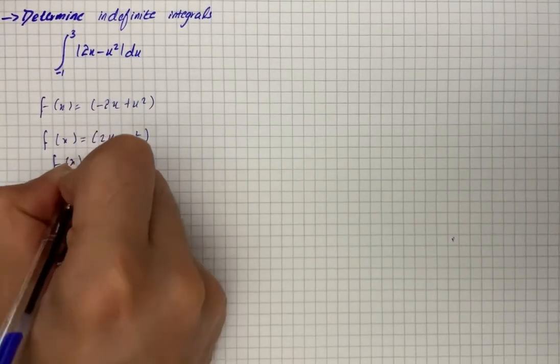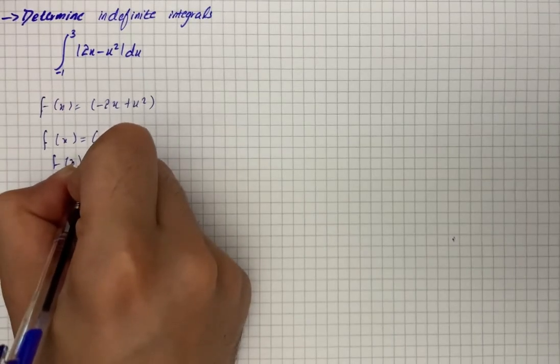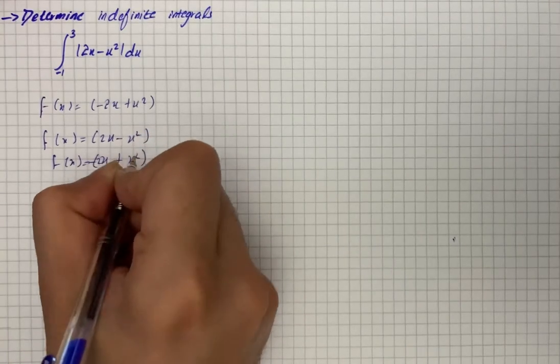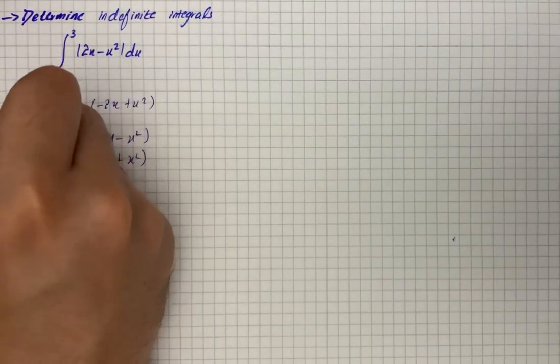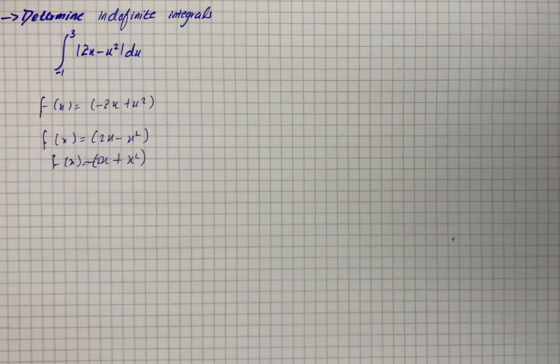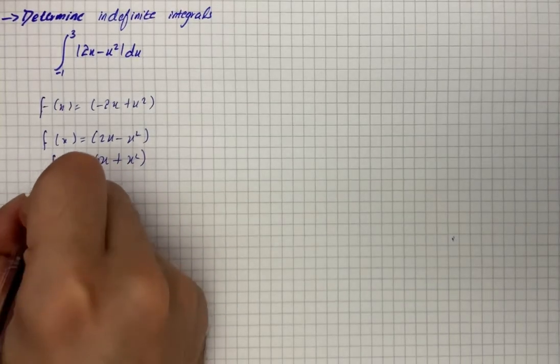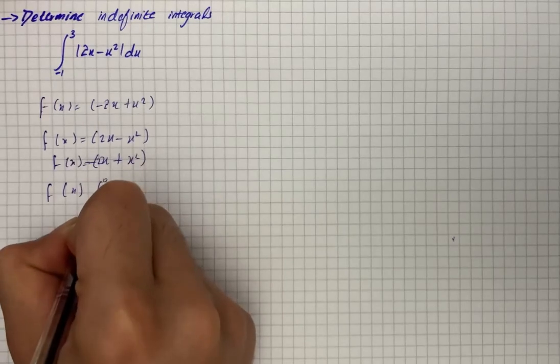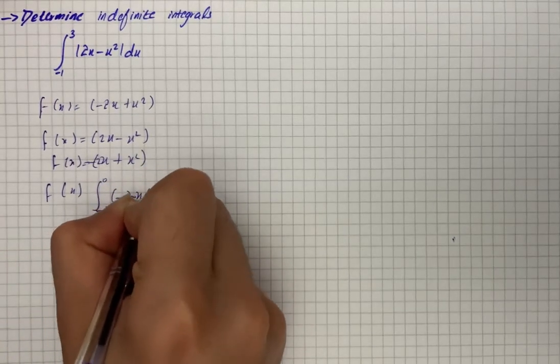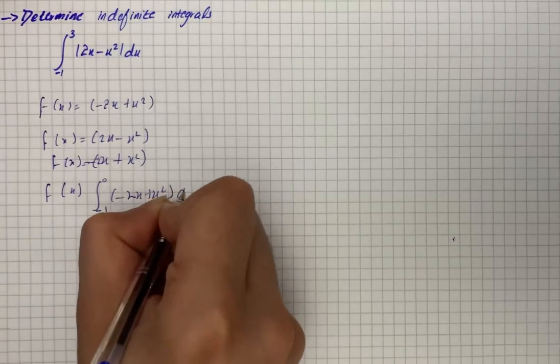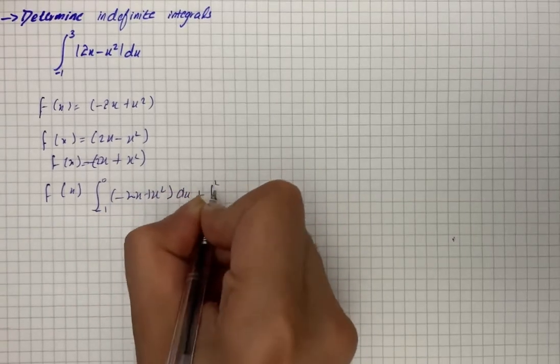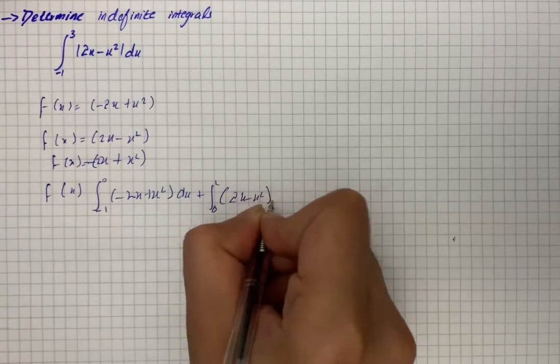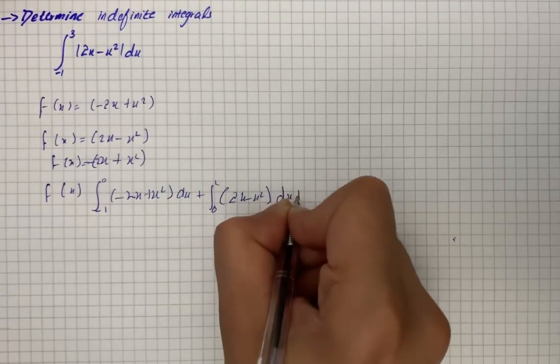Then f(x) is equal to minus 2x plus x squared. So here we have the condition, so we can write f(x) into the integral from negative 1 to 0 of minus 2x plus x squared dx, plus from 0 to 2 of 2x minus x squared dx, plus from 2 to 3 of minus 2x plus x squared dx.